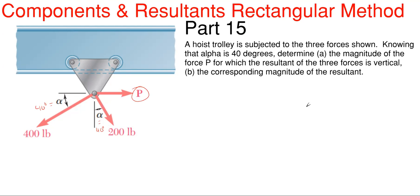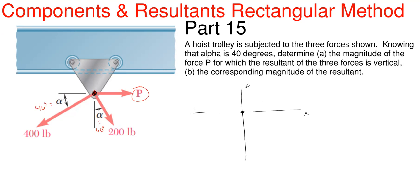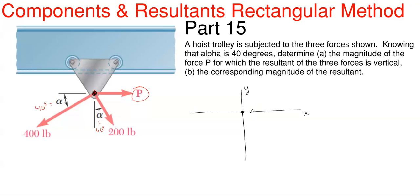Let's start by drawing a free body diagram, which is just a simplistic view of what's going on here. We're going to set up an x-y coordinate system. The center — the origin — will be the point where all forces act, since the 400, 200, and P all act on that single point. There's my x-axis and my y-axis.